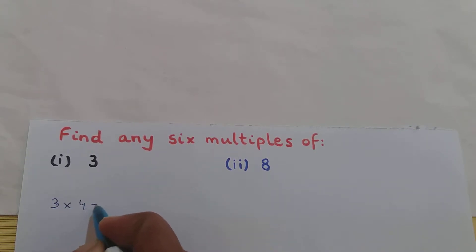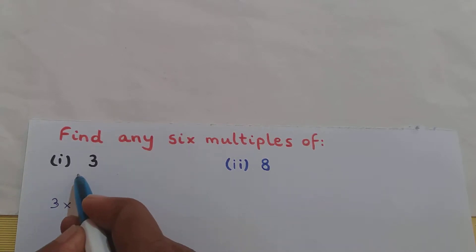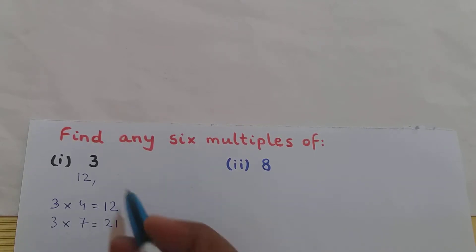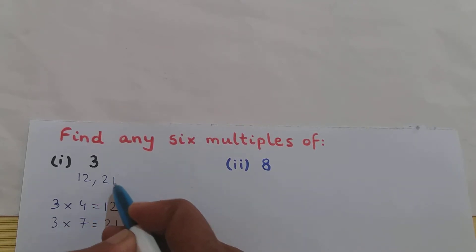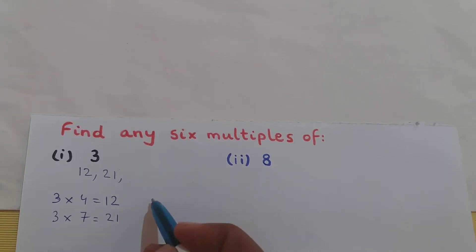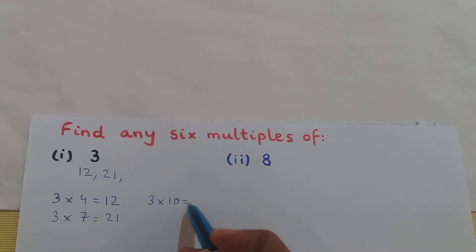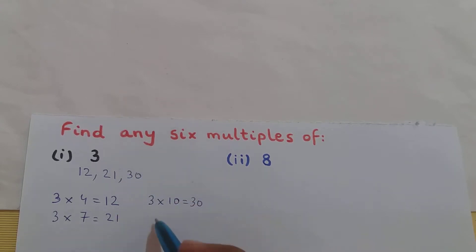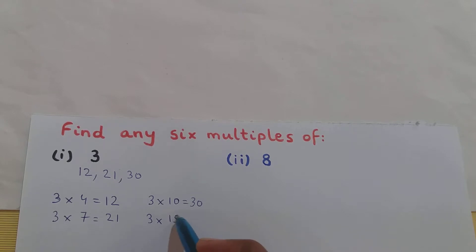3 into 4 is 12, so 12 is a multiple of 3. 3 into 7 is 21, so 21 is a multiple of 3. 3 into 10 is 30, so 30 is a multiple of 3.